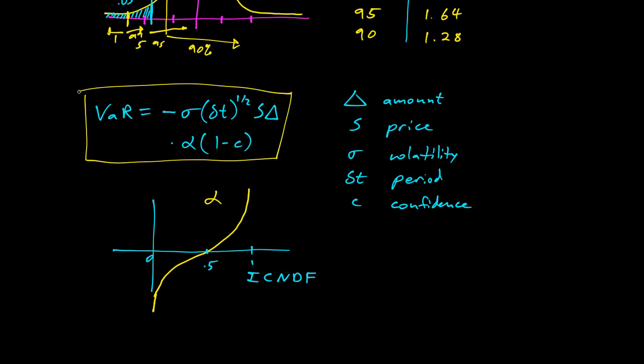So alpha is encoding this table up here, and you need the inverse cumulative normal distribution function to be able to calculate VaR here. All right, so there we go, there's our formula. And so how do we get that? This is the standard deviation of returns, then the alpha part here tells us how many standard deviations we need, and then S times delta just scales it up to what we actually have in our portfolio. So pretty cool.